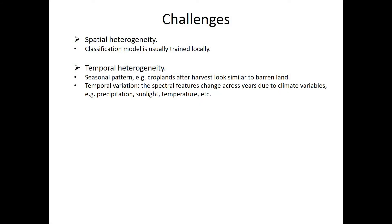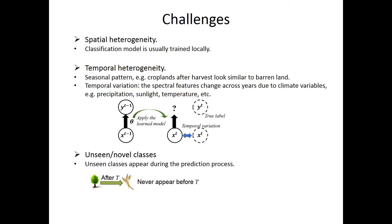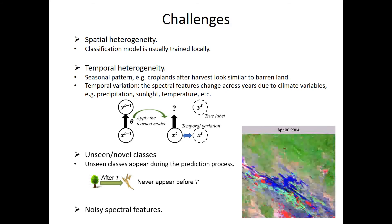The challenges in this task are in several aspects. First, the data contains much spatial and temporal heterogeneity. Temporal heterogeneity includes seasonal patterns and temporal variation. The temporal variation means the spectral features of each land cover can change across years because of the changing environment, and if we directly apply the learned model to recent years it will perform very poorly. Additionally, there will be some unseen or novel classes that appear during the prediction process. Finally, the collected multi-spectral data can also be very noisy.